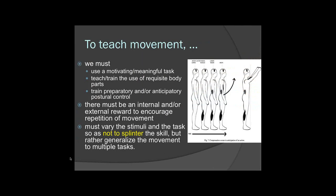So what happens if you can't move certain parts of your body and you're unable to reach? We still have to provide all of those things that you would normally self-initiate. We need to provide a motivating and meaningful task, teach and train the person how to use the body parts we want them to use, and train them not to fall over as they're reaching in different directions. We need to train the preparatory or anticipatory postural responses and provide some internal or external reward. Most importantly, we have to vary the stimulus — don't always present the same object, or we'll end up what we call splintering a skill.